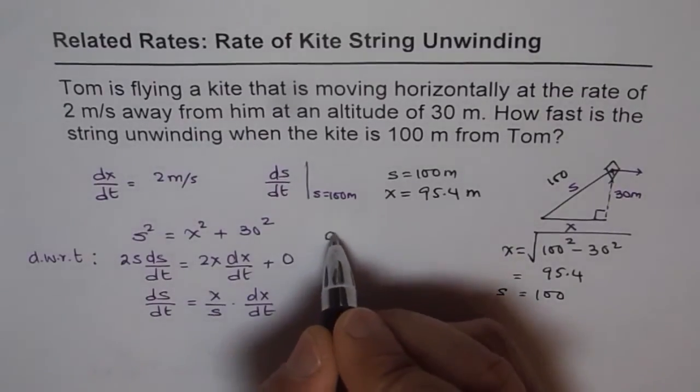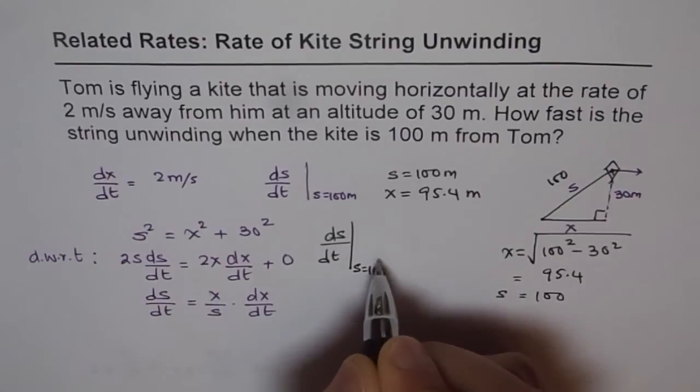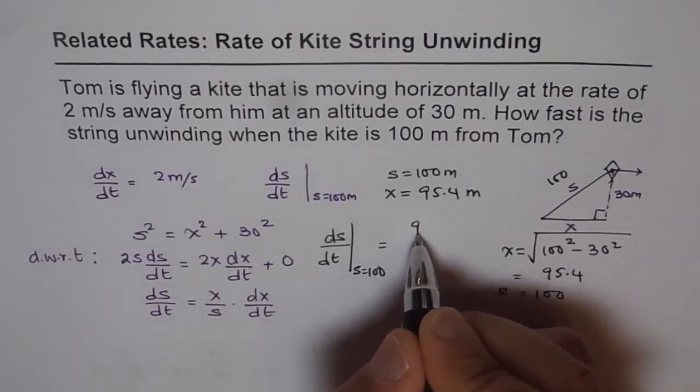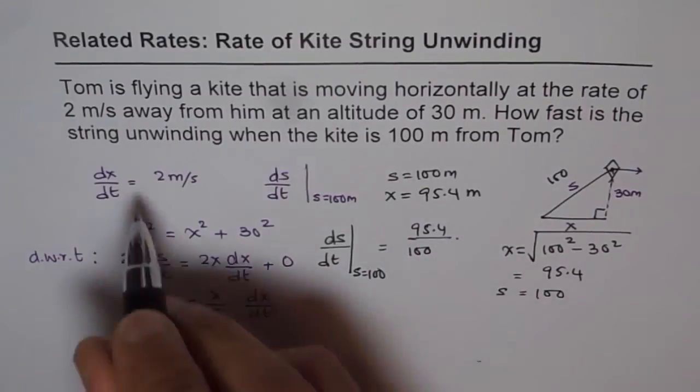So rate of change of the string, ds/dt, as s equals 100 is equals to 95.4 divided by 100 times 2.